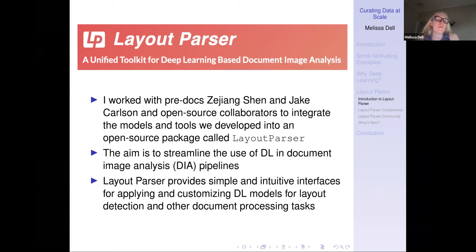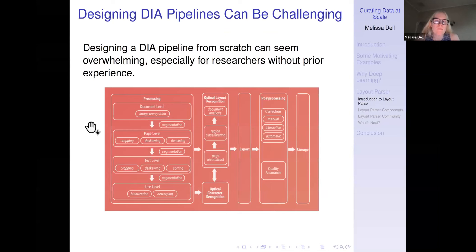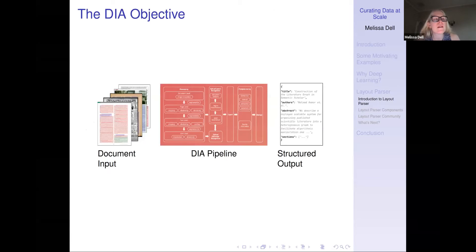I worked with a couple of my pre-docs — Zejang Shen and Jake Carlson — and other open source collaborators to integrate the models and tools we developed into an open source package called Layout Parser. The aim of Layout Parser is to streamline the use of deep learning in document image analysis pipelines. By document image analysis I mean taking a raw document and converting it into structured data. Layout Parser aims to provide simple and intuitive interfaces for applying and customizing deep learning models for layout detection and other document processing tasks.